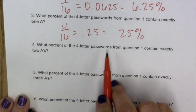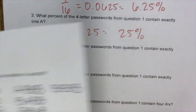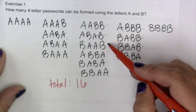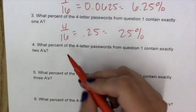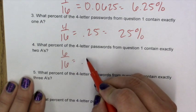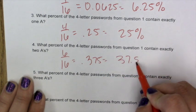What percent of four letter passwords from Question 1 contain exactly two A's? We have a column for that as well. It would be this column right here. 1, 2, 3, 4, 5, 6 out of the 16, which when we divide is 0.375 or 37.5%.